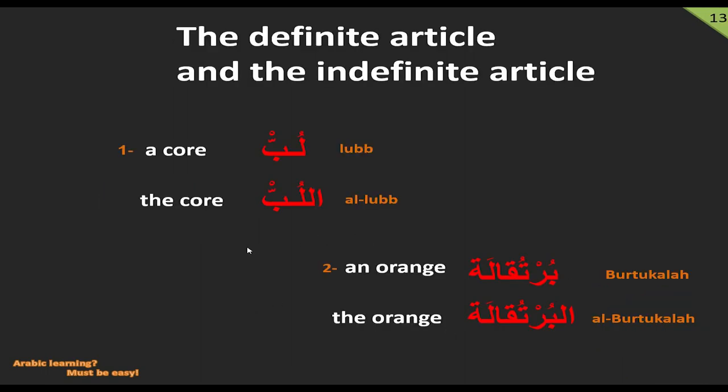Finally, we have two examples here of the definite and indefinite articles. For example, 'a core' is لب (lubb).